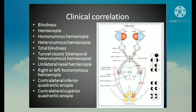The loss of vision in one half of the visual field, right or left, is termed hemianopia. If the same half of the visual field is affected in both eyes, it is called homonymous hemianopia. On the other hand, if different halves of the visual field are affected, it is called heteronymous hemianopia.